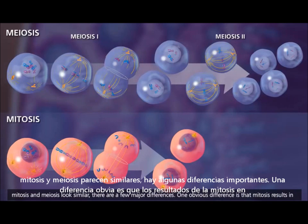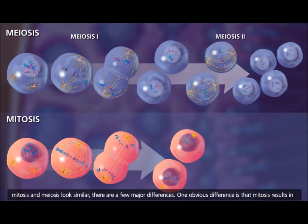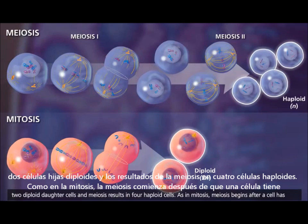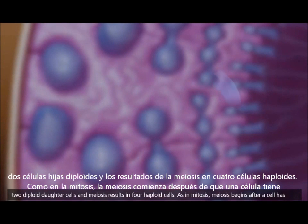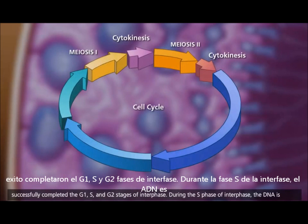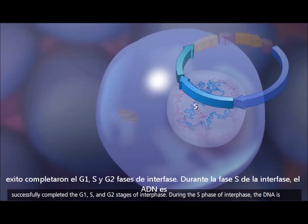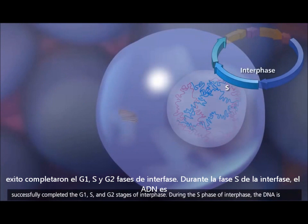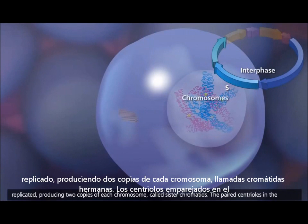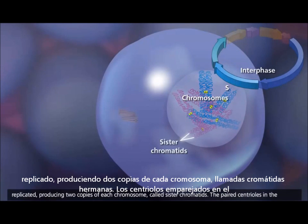One obvious difference is that mitosis results in two diploid daughter cells, and meiosis results in four haploid cells. As in mitosis, meiosis begins after a cell has successfully completed the G1, S, and G2 stages of interphase. During the S phase of interphase, the DNA is replicated, producing two copies of each chromosome called sister chromatids.